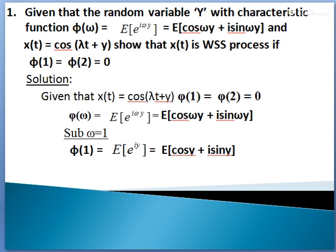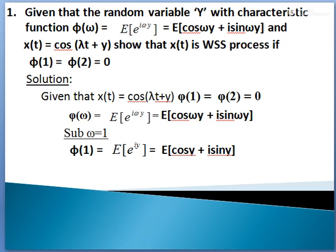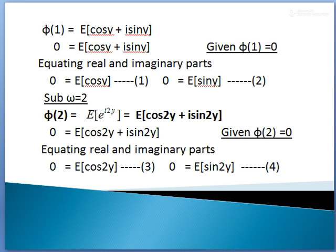First, we are going to substitute ω equal to 1. In this step, ω = 1 is substituted. φ(1) is equal to E[cos(Y) + i·sin(Y)]. We know that the given condition states φ(1) is equal to 0. So instead of φ(1), we replace it with 0. So 0 is equal to E[cos(Y) + i·sin(Y)].